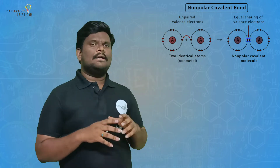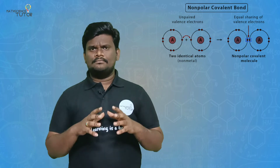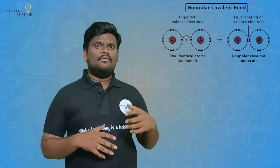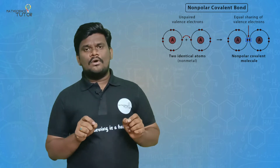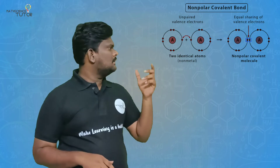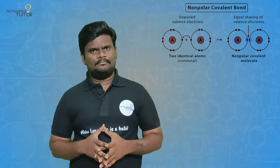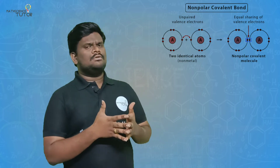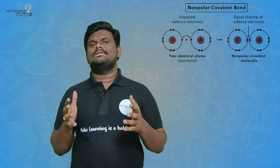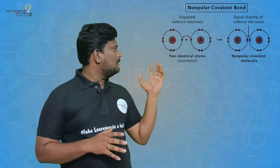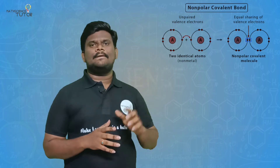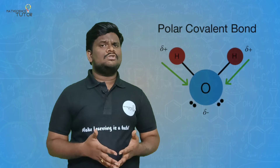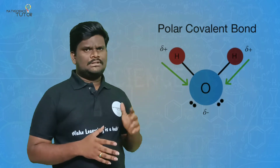Here the two oxygen atoms have the same kind of electronic configuration. When they form a bond, their outermost shells complete the octet and the atom becomes stable. That is why oxygen in its gaseous state bonds with the same oxygen atom.